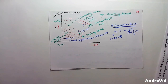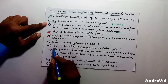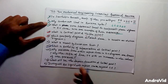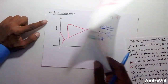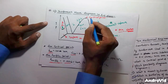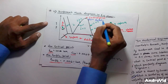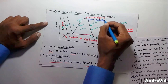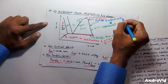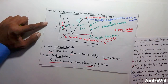The next question is: what is the enthalpy of vaporization at the critical point? Let me draw a diagram. The critical point is shown here, and you must keep in mind that the value of enthalpy of vaporization at the critical point will be zero.